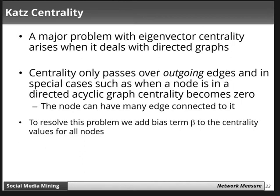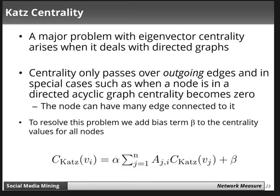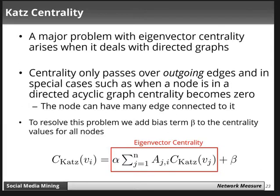To resolve this problem we add a bias term beta to the centrality value for all nodes. The Katz centrality of vertex vi is: alpha times the summation over j from 1 to n of a_ji times c_katz(vj) plus beta, where j is the neighboring vertex of vi. This is eigenvector centrality with a bias term added so that it does not become zero in the case of a directed acyclic graph.